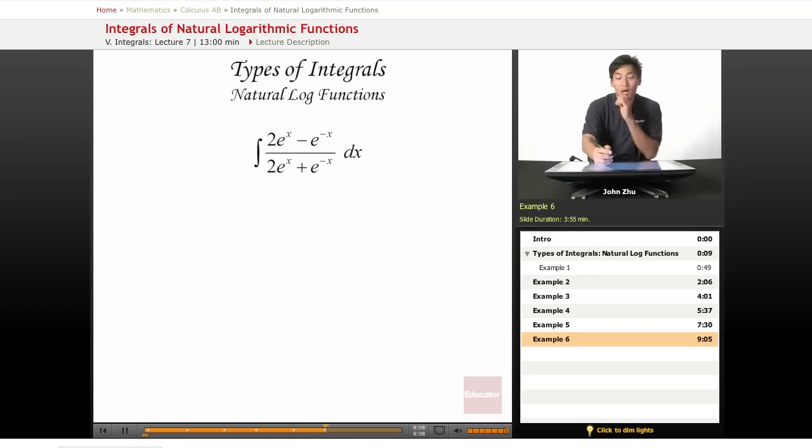Okay, our last example looks very complicated, seemingly impossible to solve. We have to notice that there are a bunch of e to the x's, and we know that the relationship between e to the x and its derivative is direct. They're the same.